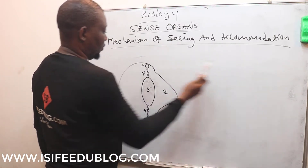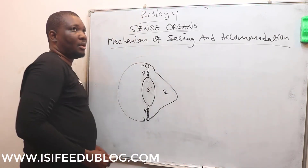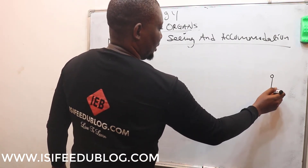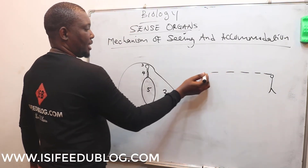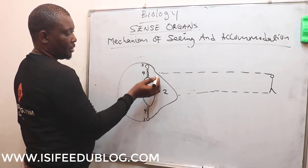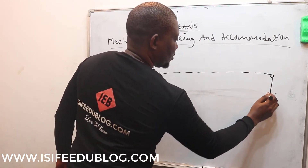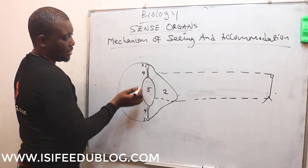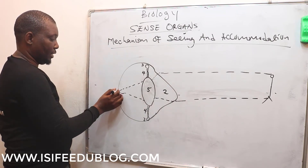Light is going into this eye and will focus on the retina. Let's start with light coming from a far object. When you look at a far object, the light will come in a straight, parallel line to the eye. The cornea bends these light rays, and the lens also bends these light rays so that they can be brought to focus on the retina.